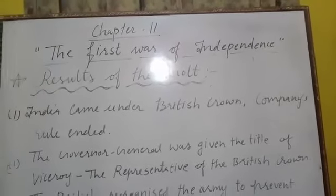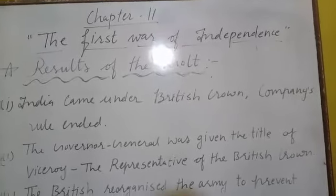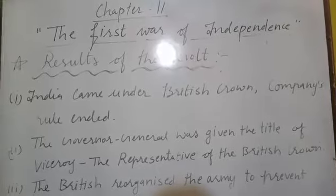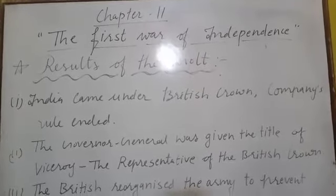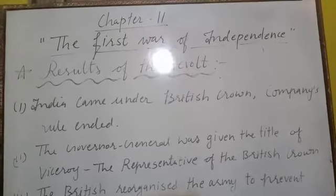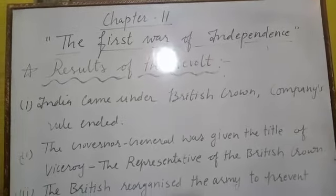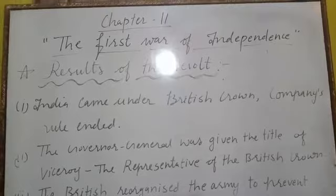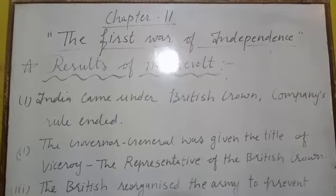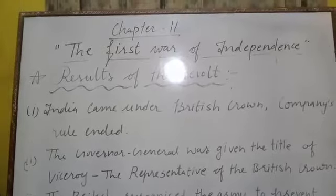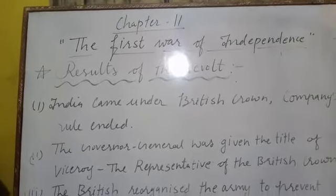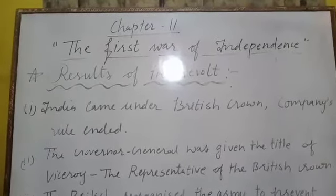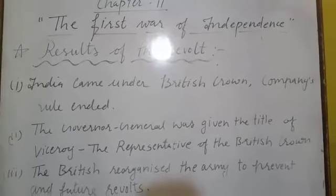First, India came under the British Crown, with the rule of the East India Company ending. With Queen Victoria's proclamation of November 1, 1858, power was transferred from the East India Company to the Crown of England. Queen Victoria also assumed the title of Empress of India. Additionally, the Governor General was given the title of Viceroy, as the representative of the British Crown.